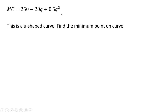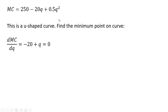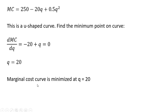Here's our marginal cost equation. This is going to be a U-shaped curve. We're going to find the minimum point on the curve to help with graphing it. To get the minimum point of this U-shaped marginal cost curve, we take the derivative of it with respect to q, which gives us minus 20 plus q. We set this result equal to zero and solve for q, giving us q equals 20.